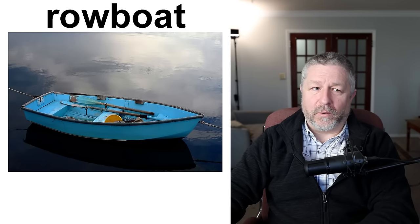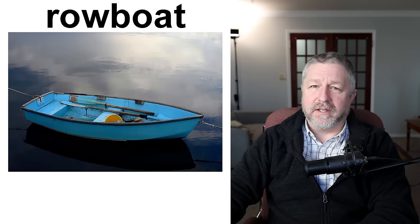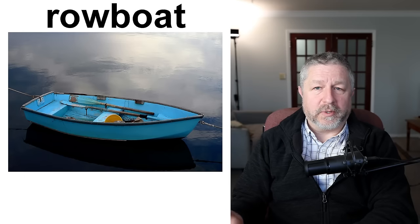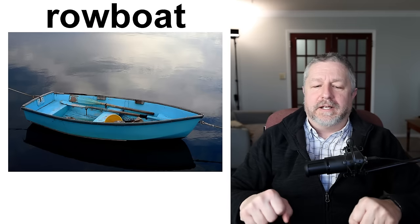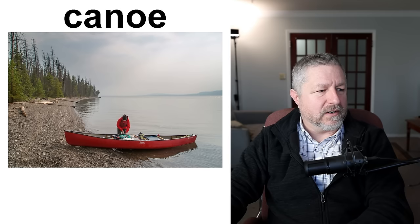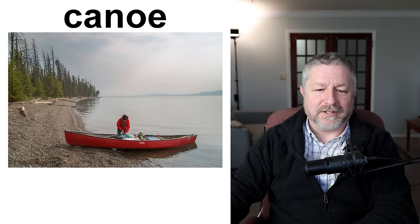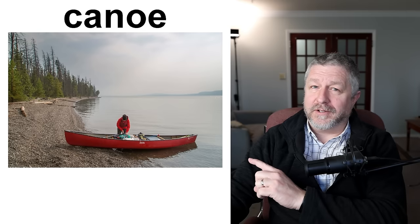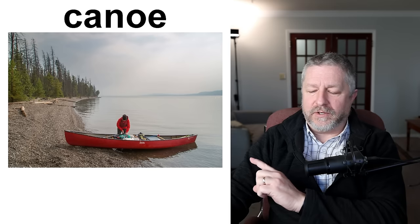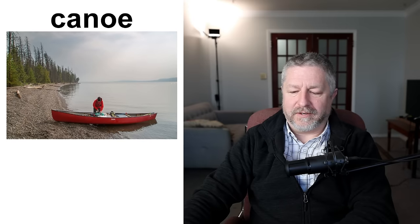A rowboat is a boat where you use oars to get from one place to another. A canoe is similar but a little different — it looks more like an old traditional boat, and you paddle like this, holding the oar differently than in a rowboat where you connect the oars to the boat. A canoe is a pretty common sight in northern Canada. If you come to Canada and go camping in the north, you will see canoes everywhere — people carrying canoes to the lakes, with one, two, or three people enjoying their time on the water.